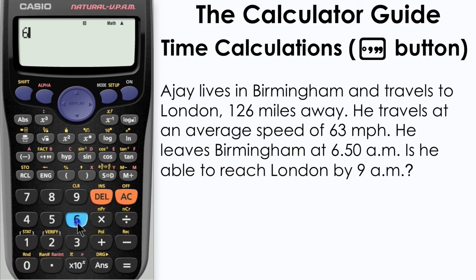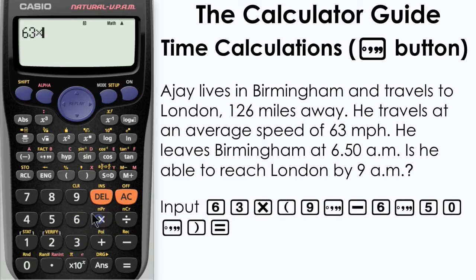Input 63 as speed times and then enter some brackets and then we want 9 and the degrees minutes and seconds minus 6.50am. So input that using the degrees minutes and seconds. Close your brackets and press equals.